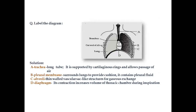Now let's revise by labeling the diagram of the human respiratory system. Part A is the trachea. Part B is the pleural membrane, the lining surrounding the lungs. Part C is the alveoli — the bag-like vascularized structures used for gas exchange. Part D is the diaphragm, whose contraction increases the volume of the thoracic chamber where the lungs are present, increasing volume during inspiration.